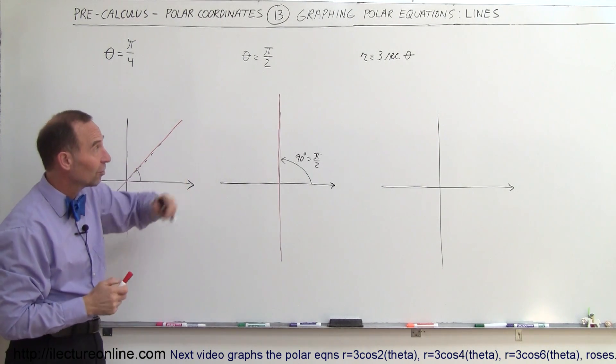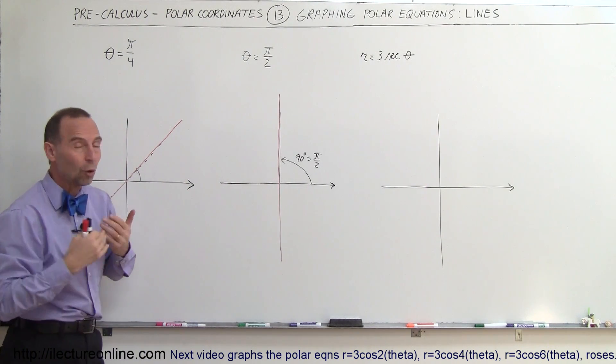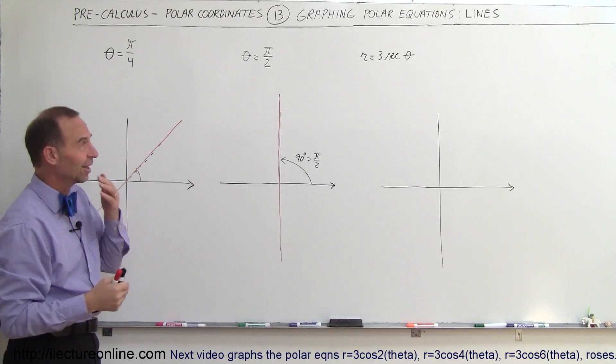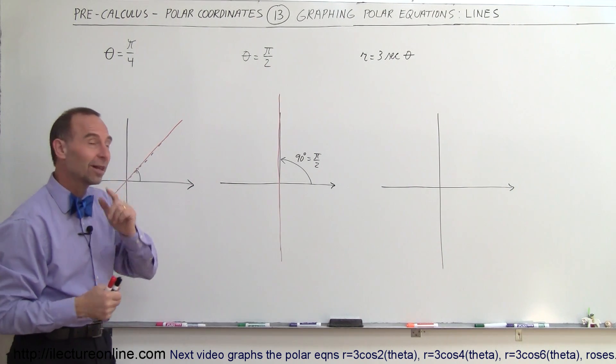Now we can also have equations like r equals 3 times the secant of theta, which also represent a straight line. Now you say, wow, how can that represent a straight line? But you'll see.